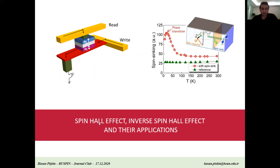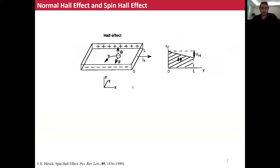So let's start with the spin hole effect. In order to distinguish the spin hole effect from the normal hole effect, I wanted to give you a brief information about the normal hole effect. Let's consider we have a coordinate system, namely XYZ axes, and let's think we have a thin film of a conductor material. If we apply current through this material along the X direction, the electrons will move through this material along the minus X direction. If we apply a magnetic field perpendicular to the film plane, these moving electrons will feel a force, namely the Lorentz force.